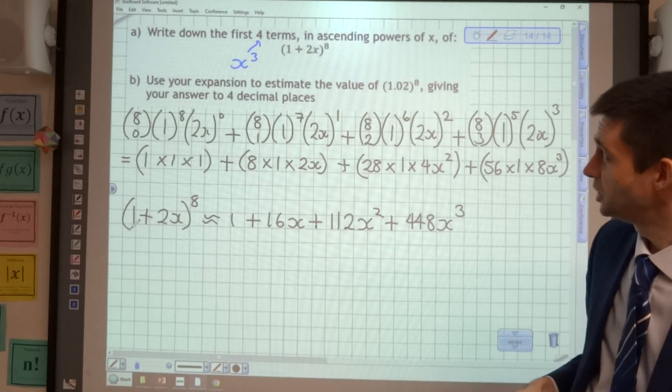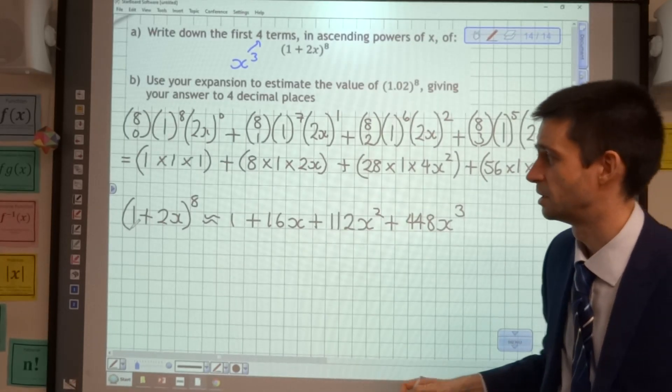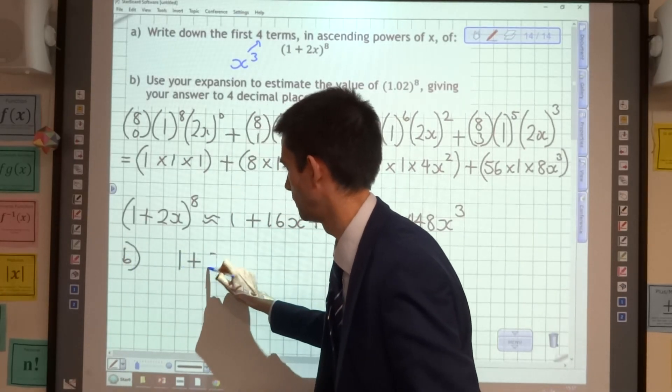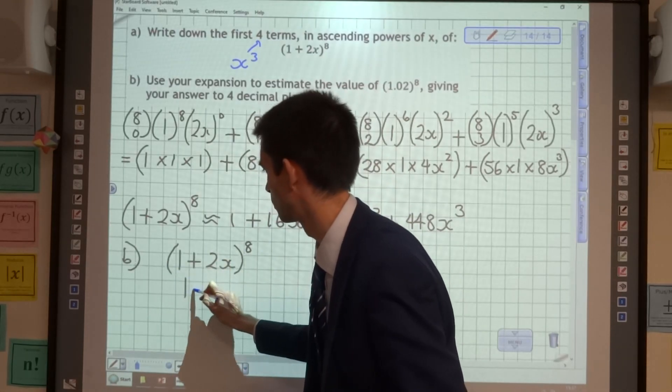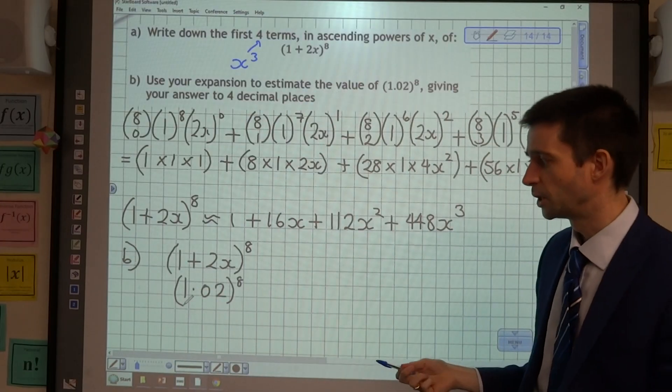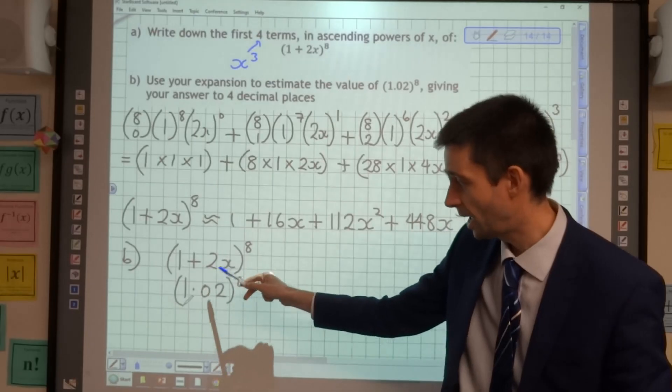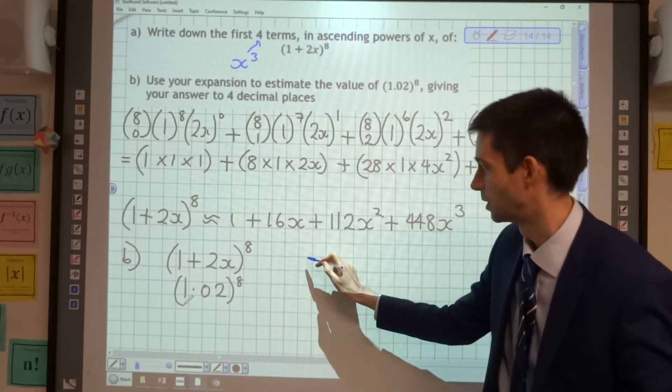So part b is saying use your expansion to estimate the value of (1.02)^8. So we're going to be using (1+2x)^8 to approximate (1.02)^8. And what you can probably see by laying it out like that is that we need to work out what x would have to be, so that when we substitute it in here, we get 1.02.